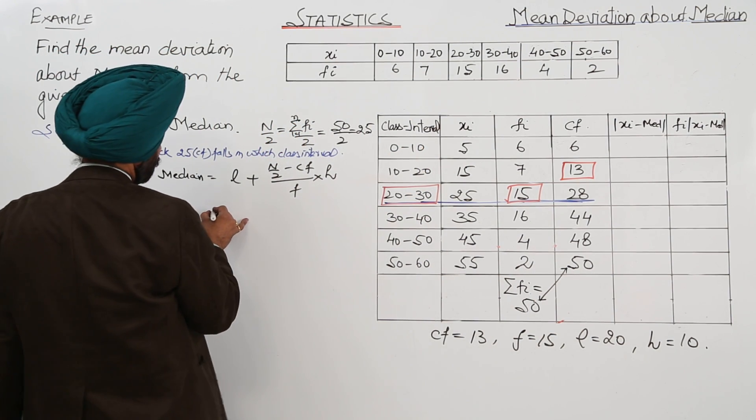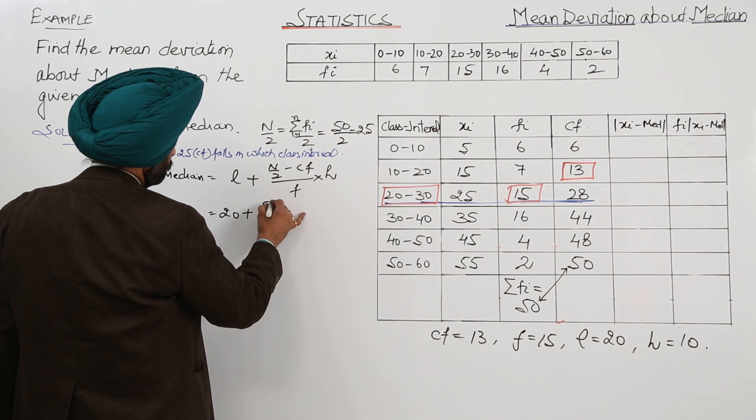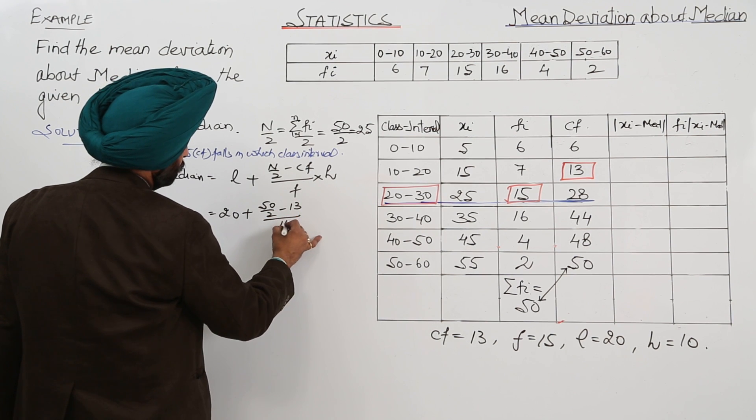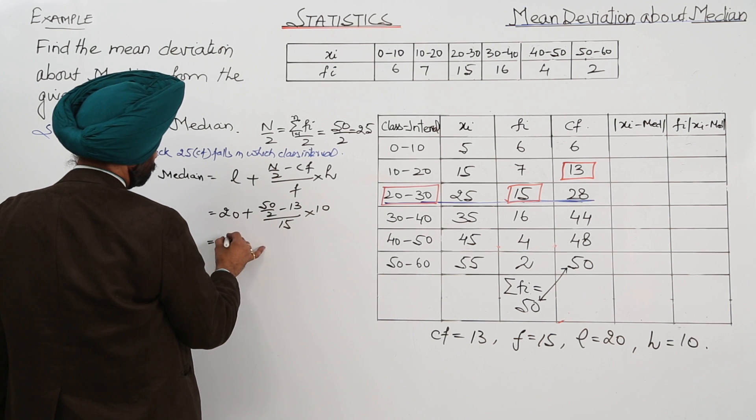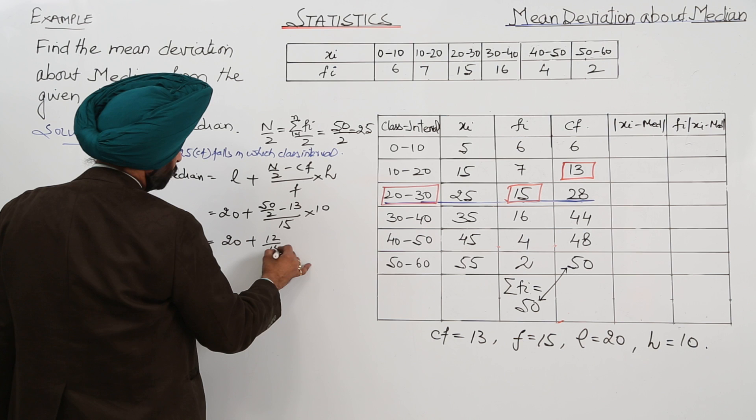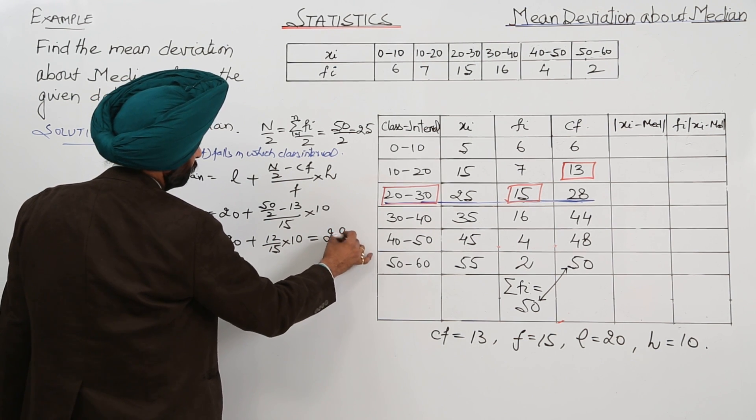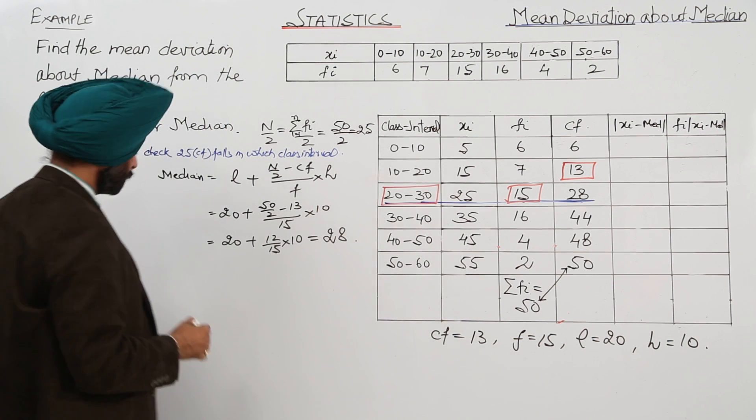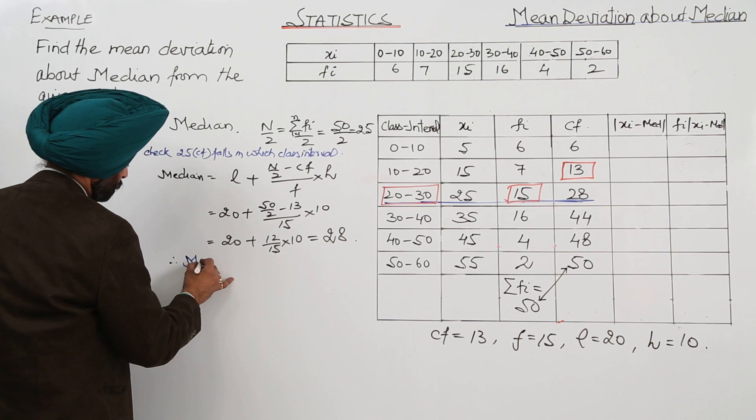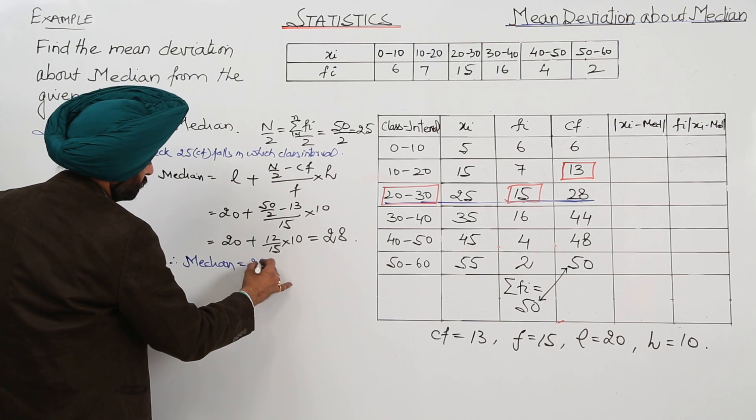Now just substituting the values, we are having 20 plus 50 by 2 minus 13 upon 15 into 10. So this becomes 20 plus 12 upon 15 into 10. This is equal to 28. Therefore median is 28.